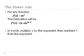Basically, what we're doing here is just moving the power down, which is n, multiplying it by the coefficient a, and then subtracting 1 from the power. So let's take a look at an example.